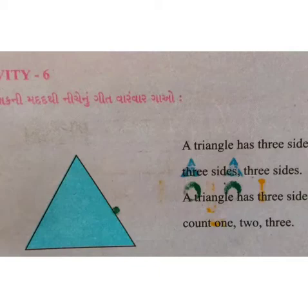A triangle has three sides. Count: one, two, three. Triangle ने three sides होई छे, जी अपने यह चुई रहाया चो. बाजु माँ triangle ने shape आपे लो चे, अझे माँ आपने देखाया चे के triangle ने three sides होई चे. One, two and three. Total, triangle has three sides.